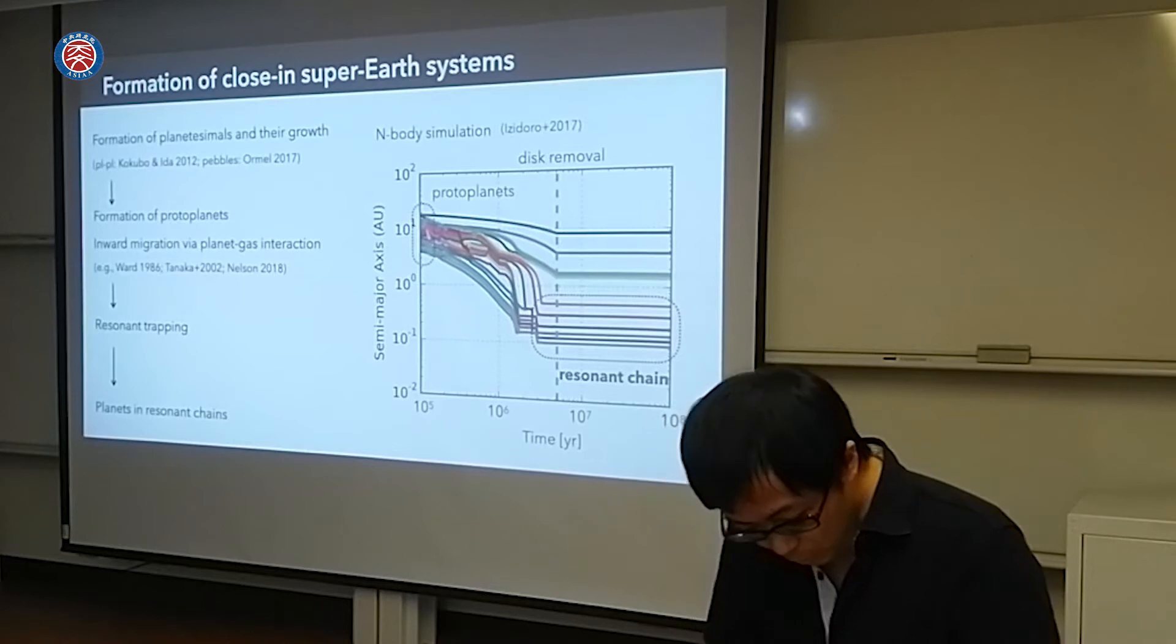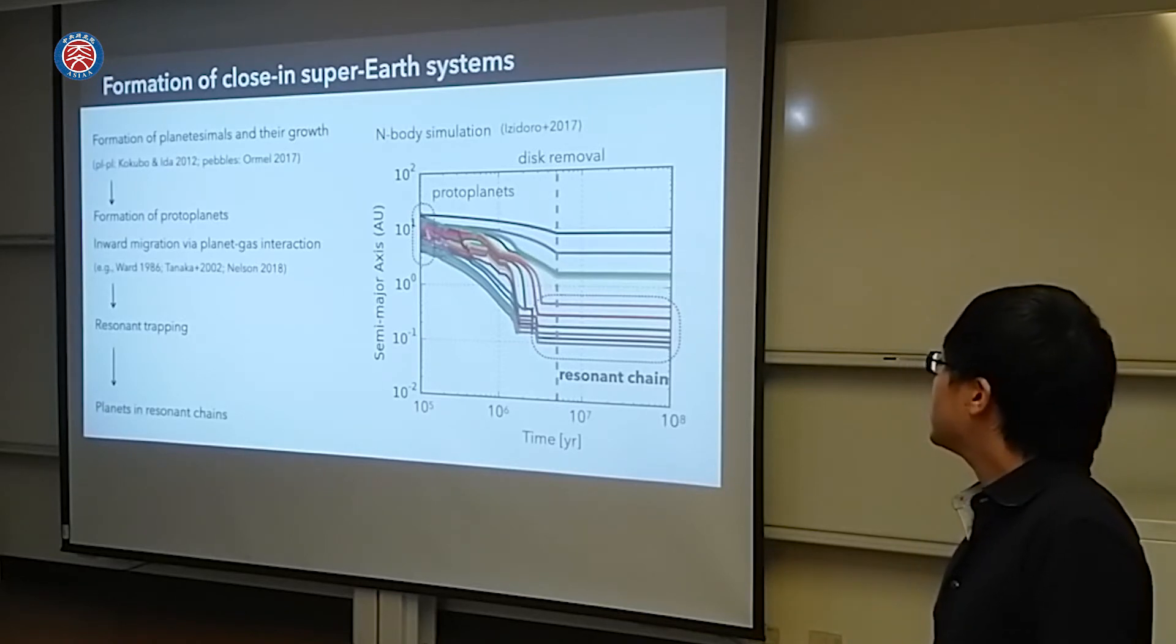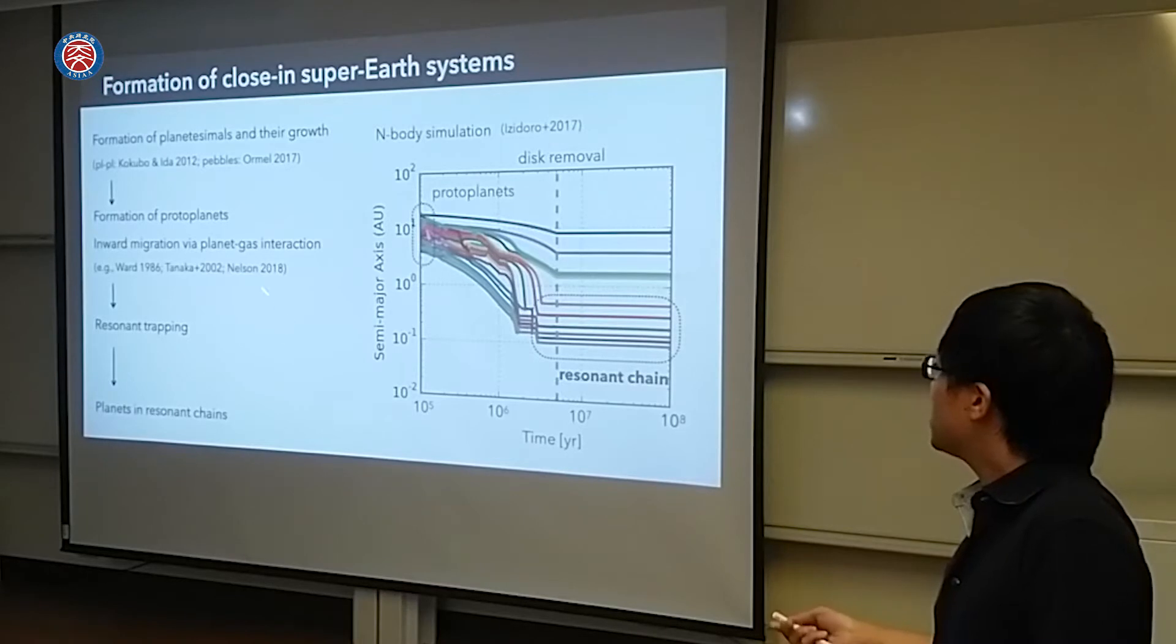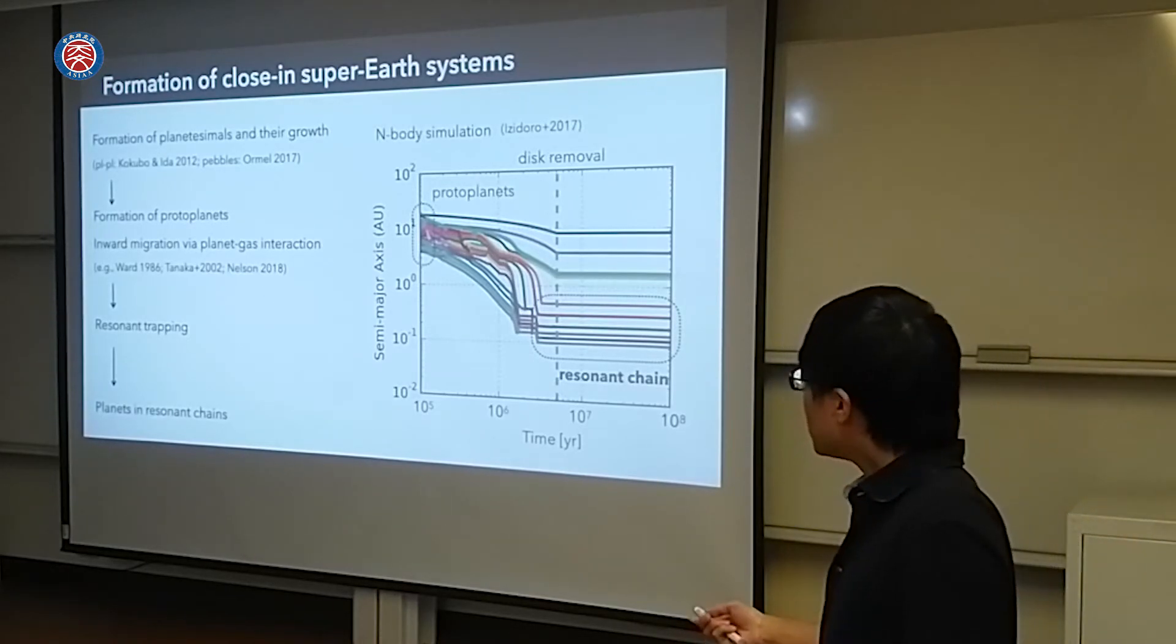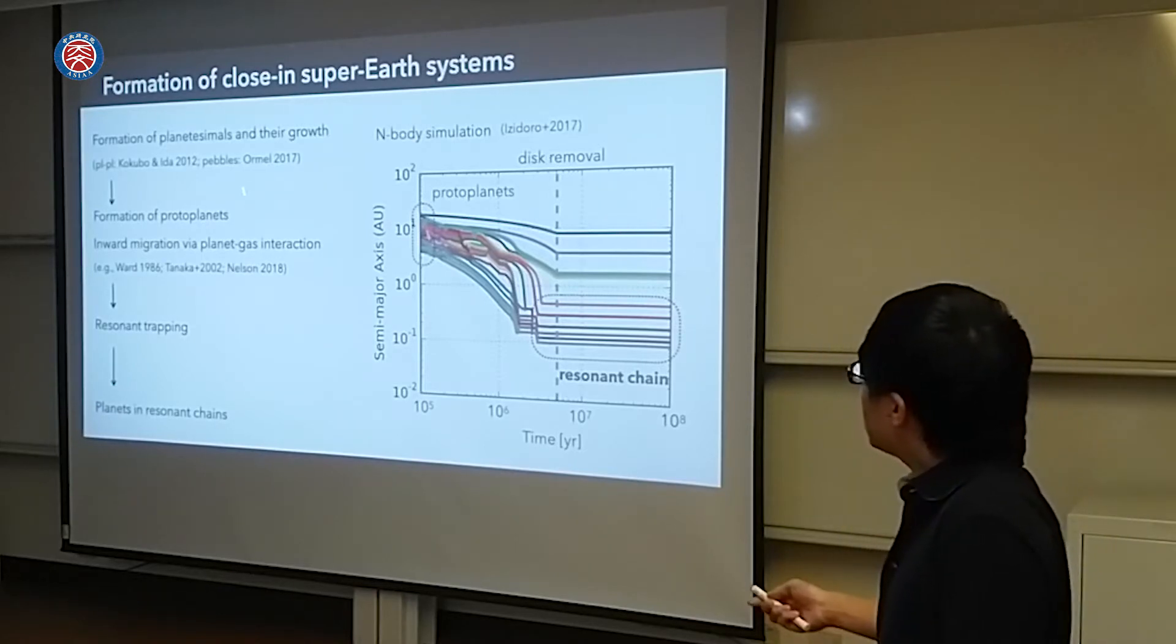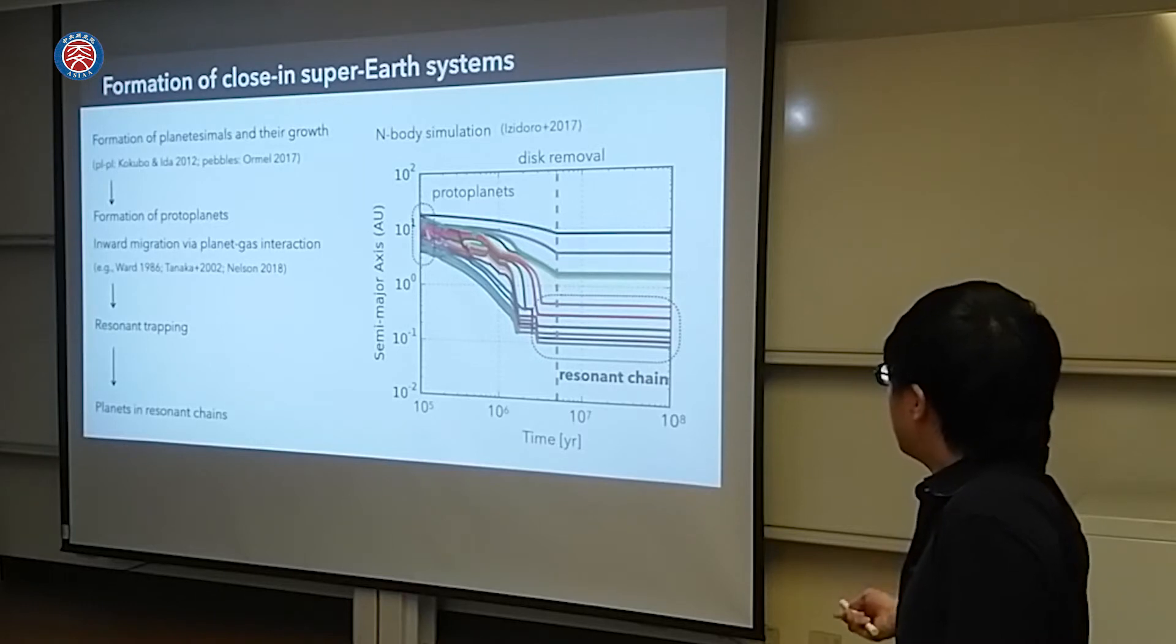The formation of close systems are studied in these about 10 years. At first, planetesimals are so-called planetesimals that grow up. This video shows the result of N-body simulation. Initially, planetesimals are close up on growth planets. Large bodies, which force the originals to migrate. These protoplanets are formed and migrate inward and trapped in resonant chains. After the gas came over, the planets are staying in resonant chains, so resonant planetary systems are formed.